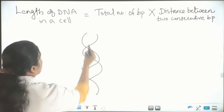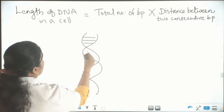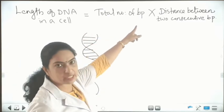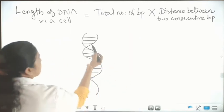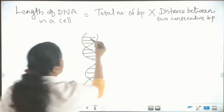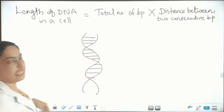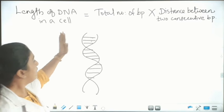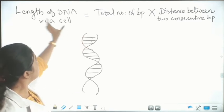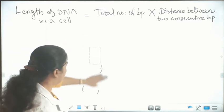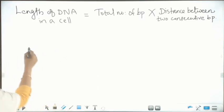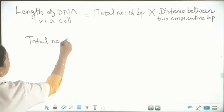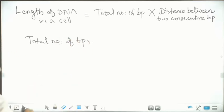In a double-helix structure, you know base pairs are there. How many base pairs are there? That is the total number of base pairs. And the next one is distance between two consecutive base pairs. So both the numbers are unique numbers. So how the length of the DNA in a cell can be calculated, we can see.